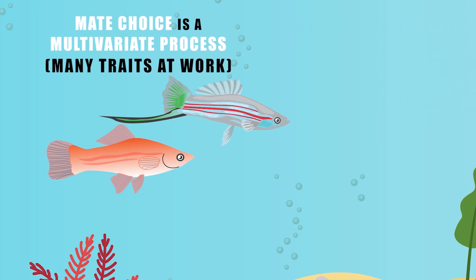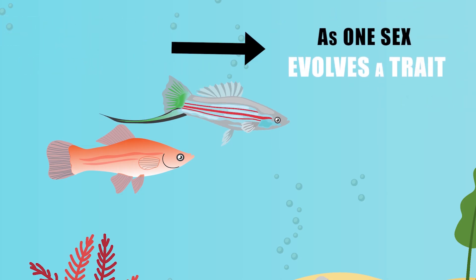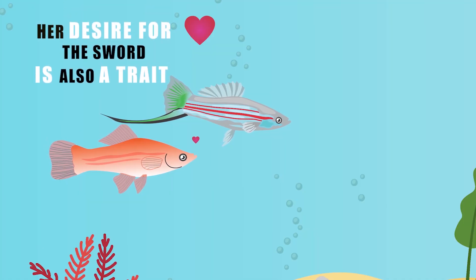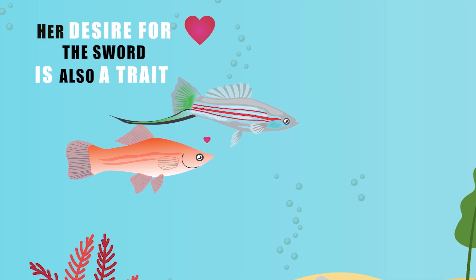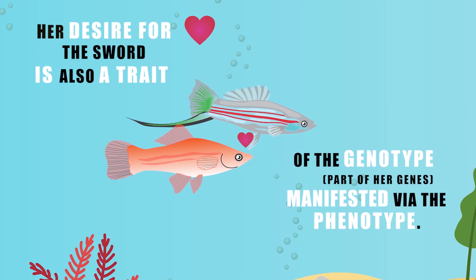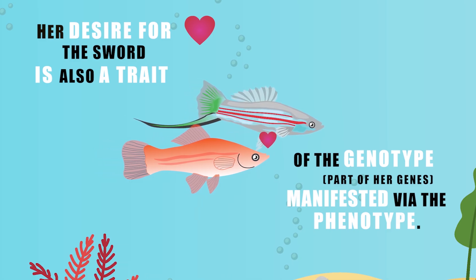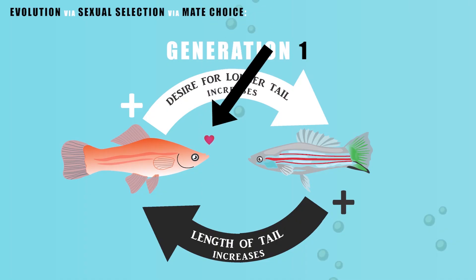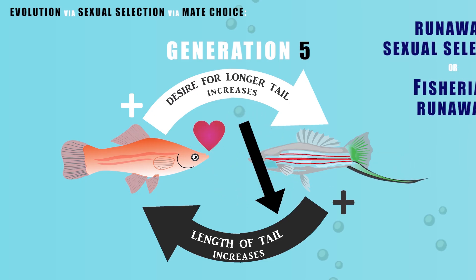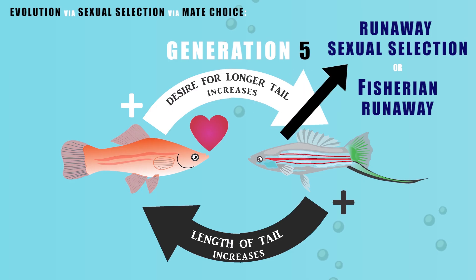A key point to remember with mate choice is that as one sex evolves a trait, such as the swordtail's long tail, the other sex must evolve a preference for that trait. The desire for the trait and the trait itself evolve in tandem, or in some cases there's actually a pre-existing preference for a trait. The desire for it in the female swordtail is also a trait of the genotype, or genes, that's manifesting as a behavior of the phenotype — and the phenotype is just how genes are expressed. As the desire for the trait increases, the trait itself becomes more pronounced, and becomes involved in a positive feedback loop in a process known as runaway sexual selection, or a Fisherian runaway.